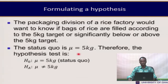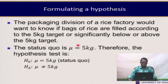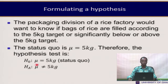Let's see an example in formulating hypotheses. The packaging division of a rice factory wants to know if bags of rice are filled according to the 5 kg target or significantly below or above it. Since we believe the machine, if working right, should fill exactly 5 kg, the null hypothesis is H₀: μ = 5 kg (the status quo), and the alternate hypothesis is μ ≠ 5 kg, which challenges the status quo.